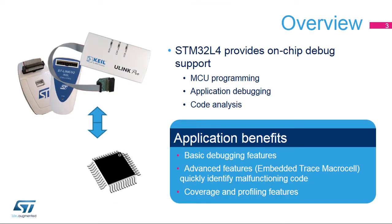The debug interface of STM32 products provides access to MCU internal resources. This interface is used to program the MCU and debug applications using basic debug features. In addition to the basic debugging features, applications benefit from the trace capability used to quickly identify possible malfunctioning parts of the application and to create coverage and profiling reports used for application tests, optimizations, and certifications.